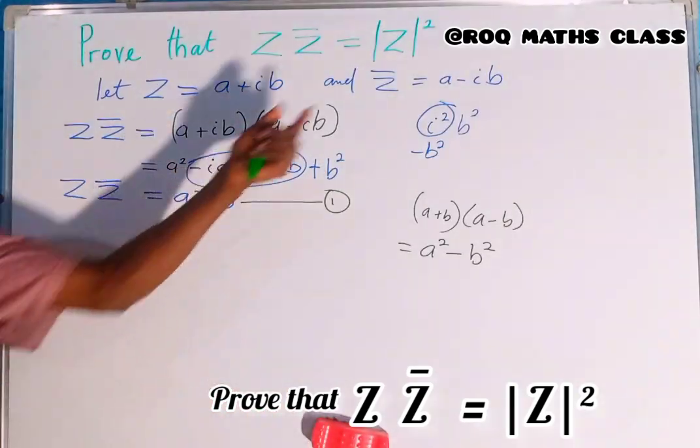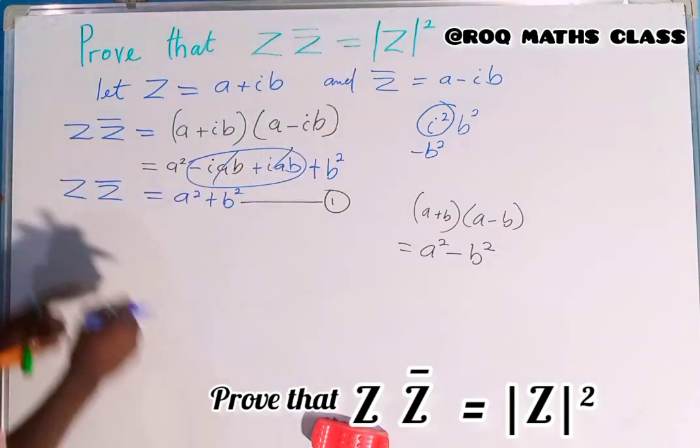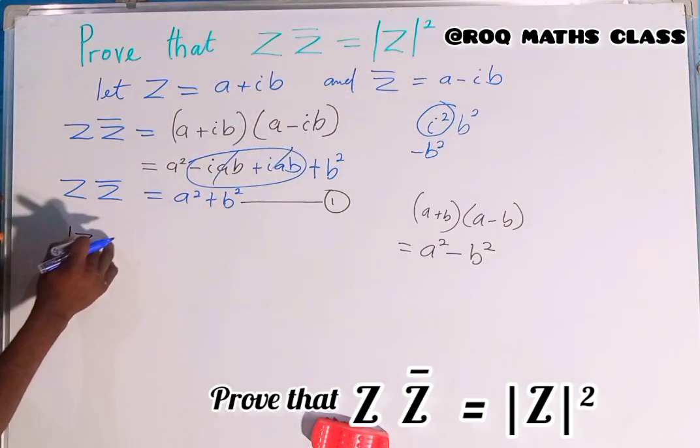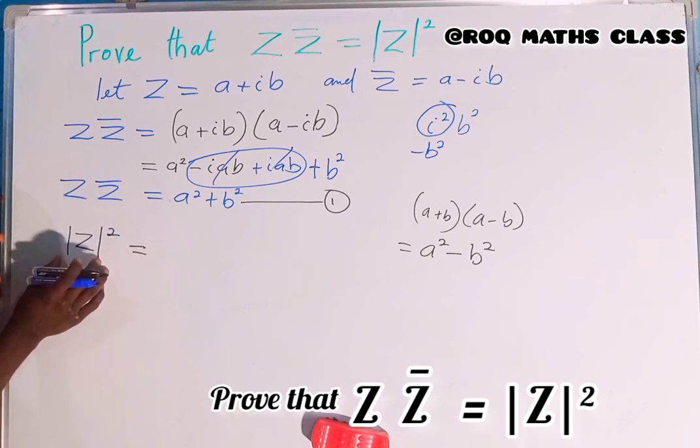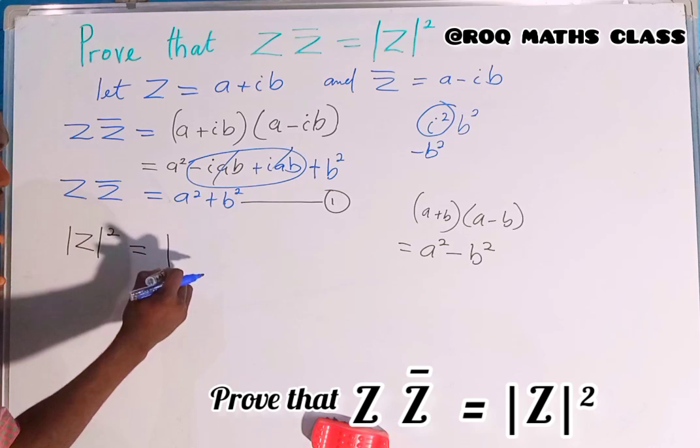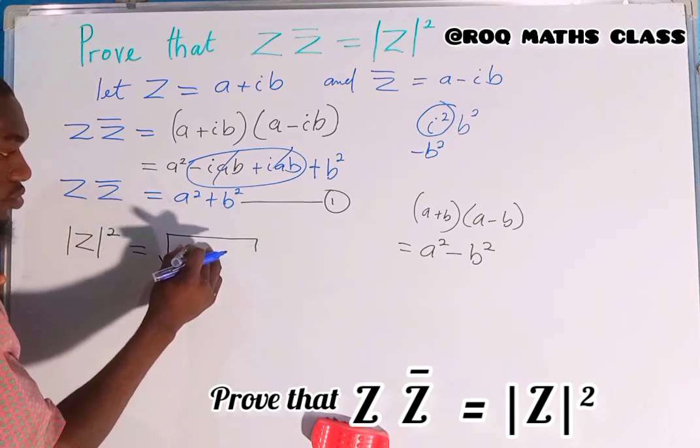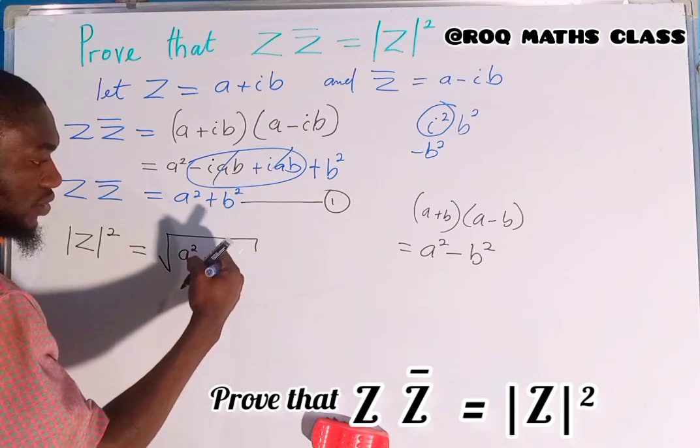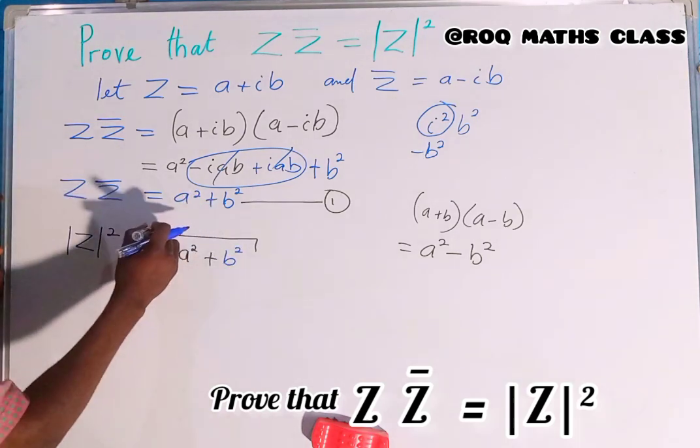Next, we want to find the modulus of Z squared. The modulus of Z is the square root of a squared plus b squared, and we have this raised to the power two.